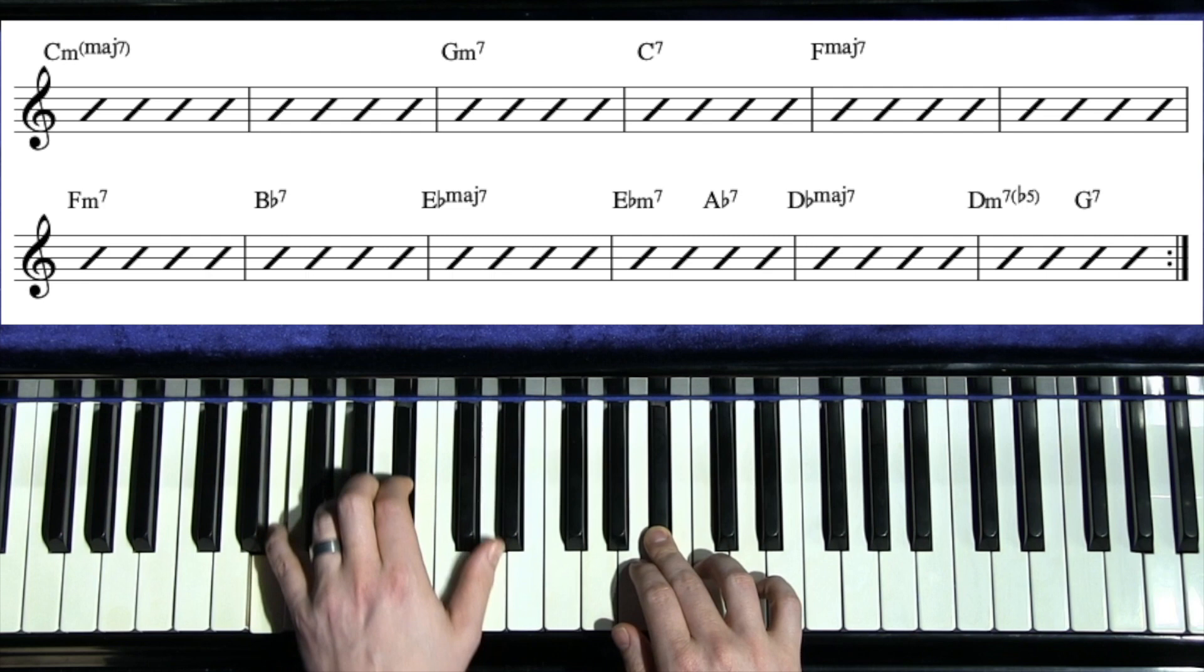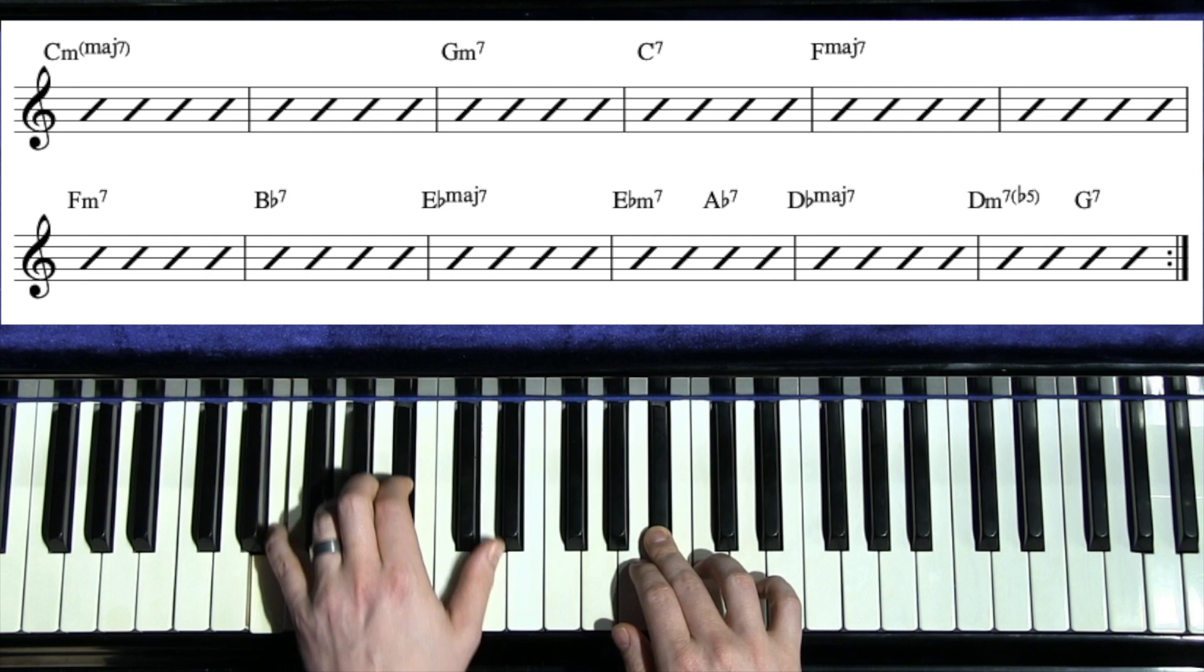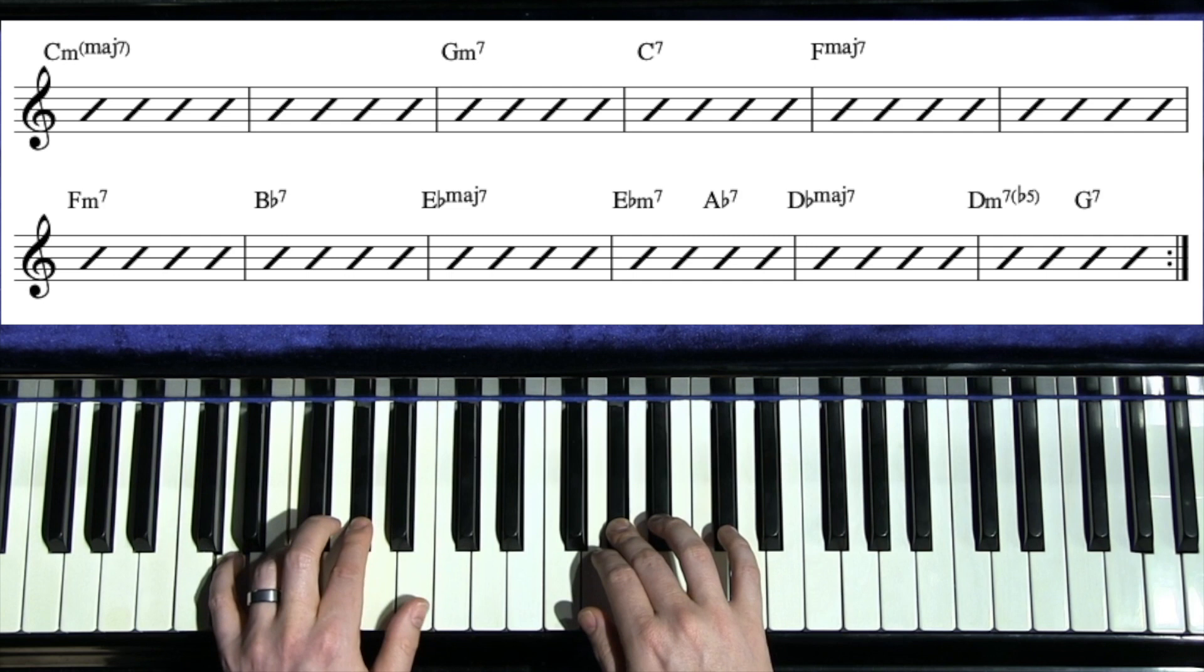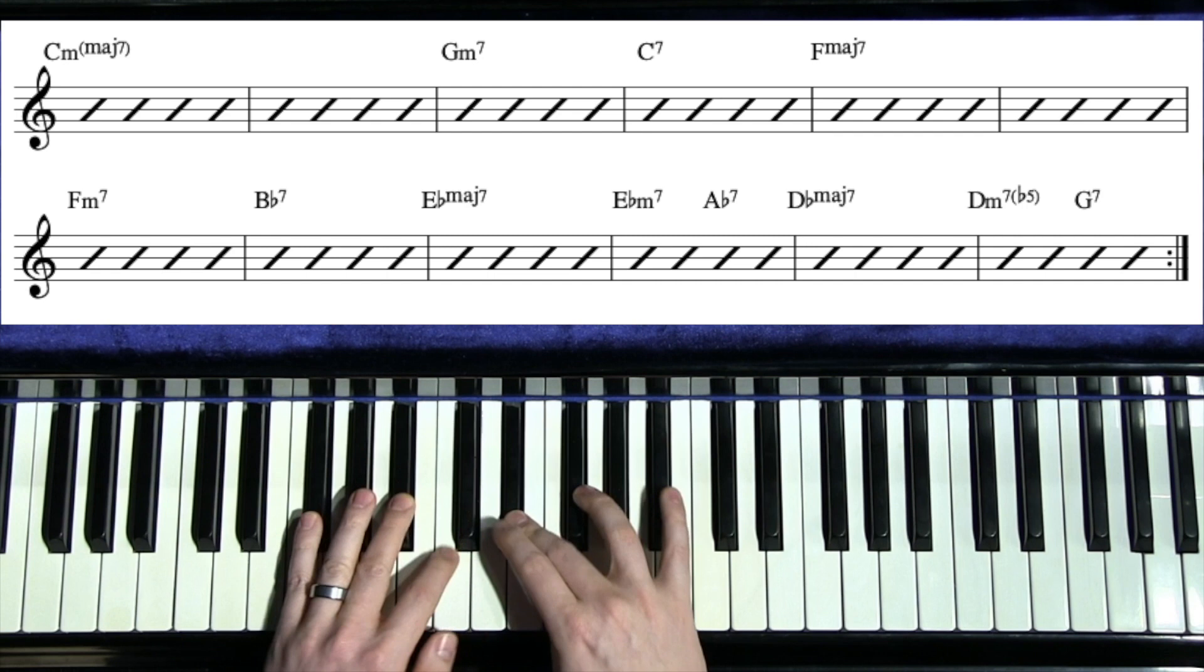So here's G minor, C seven to C seven flat nine to F major nine. Same thing here on F minor. B flat nine, B flat seven, flat nine.